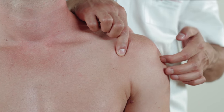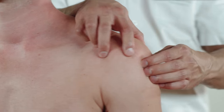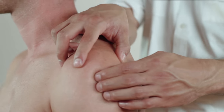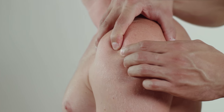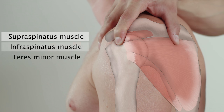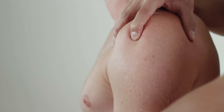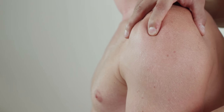Proceeding from this point, palpate the greater tubercle. Tenderness in this area may indicate pathology of the rotator cuff muscles inserted here, which include the supraspinatus, the infraspinatus, and the teres minor. The greater tubercle can be felt by slowly rotating the upper arm in and out.